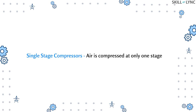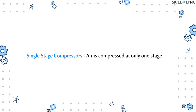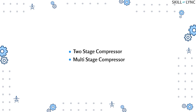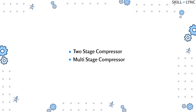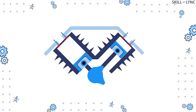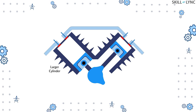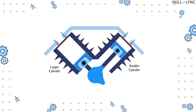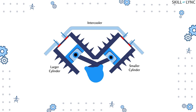So far we've discussed single and double acting compressors where the air is compressed only once — these are single stage compressors. For obtaining compressed air of high pressure, two stage and multi-stage air compressors are used. A two stage compressor uses two cylinders of different sizes, both provided with individual suction and delivery valves. The delivery valve of the larger cylinder is connected to the suction valve of the smaller cylinder via an intercooler.